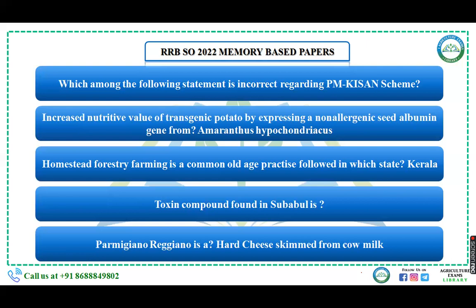Homestead forestry farming is a common old practice followed in which state? It is mainly followed in Karnataka. Homestead is an operational farm unit in which a number of crops including trees are grown along with rearing of livestock, poultry, and fish, mainly to meet the farmer's basic needs. One question was about the toxin compound found in sunflower/safflower, and another was that Parmigiano Reggiano is a hard cheese made from cow's milk.